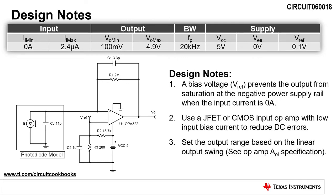When designing a photodiode amplifier circuit, there are a few design notes to be aware of. First, be sure to use a bias voltage, Vref, to prevent the output from saturating to the negative power supply rail when the input current is 0 amps. Next, be sure to use a JFET or CMOS input op amp with low input bias current to reduce DC errors. Finally, set the output range based on the linear output swing of the amplifier.